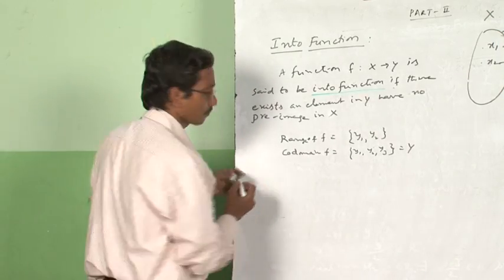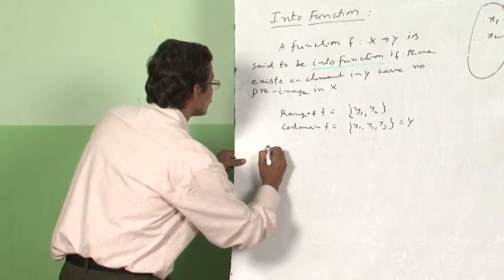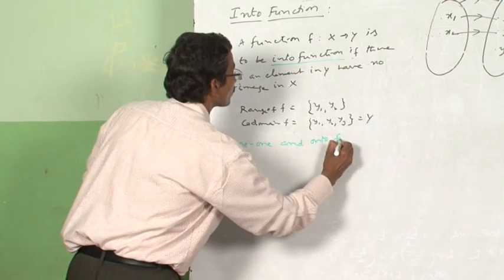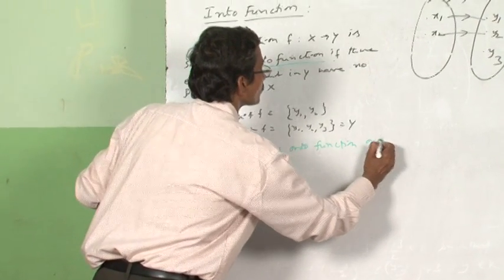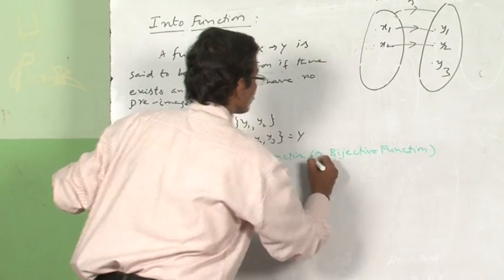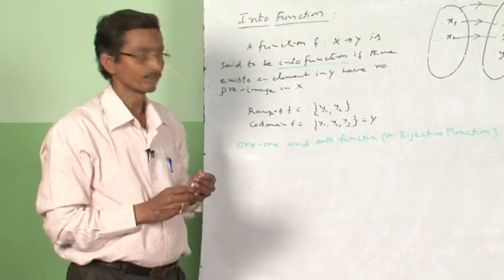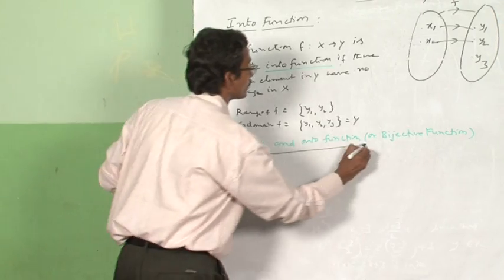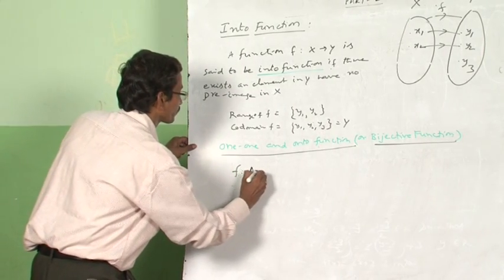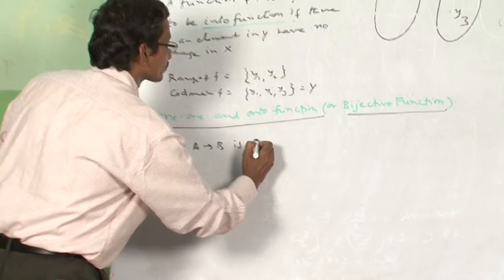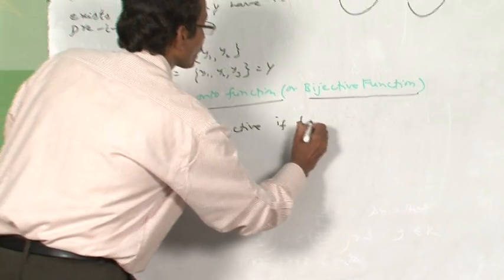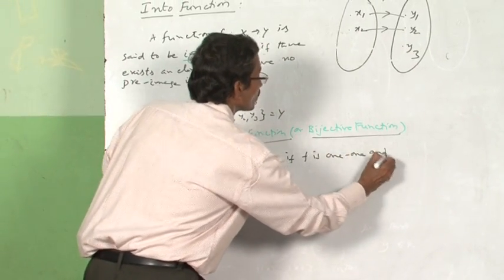Next, I will go to another topic. A function which is both one-one and onto is called a bijective function. A function F mapping from A to B is bijective if F is one-one and onto.